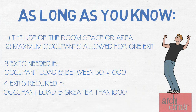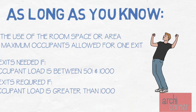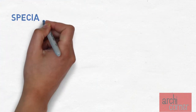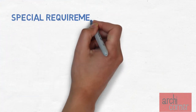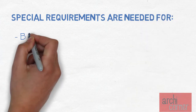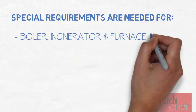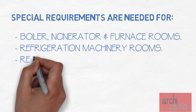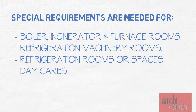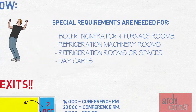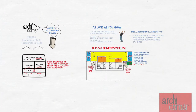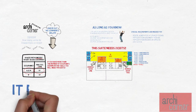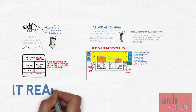Now, there are buildings that have way more occupants than this, but I'm not going to get into that. There are also special requirements for the number of exits for boiler, incinerator, and furnace rooms, refrigeration machinery rooms, refrigerated spaces, and daycares — but I'm not going to get into those either. Most other rooms, spaces, and areas are figured out the way it is shown here, and like I said, it really is that simple.